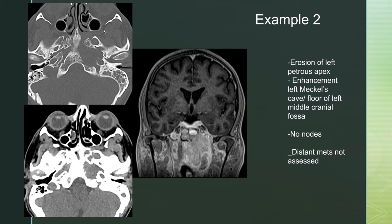Example two: on bone windows, you see a soft tissue mass eroding the left petrous apex and the lateral aspect of the clivus at the expected location of the petroclival ligament. Here it is on soft tissue windows — you can see the soft tissue with that bony erosion.